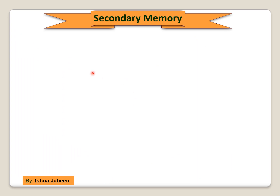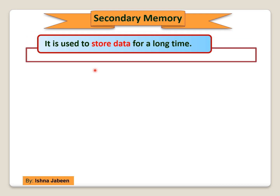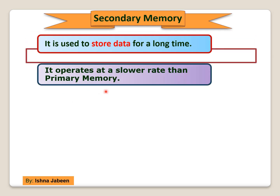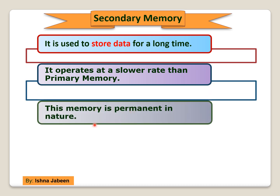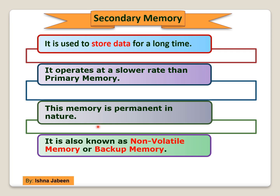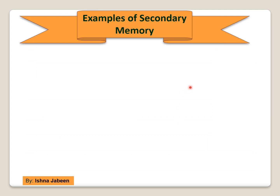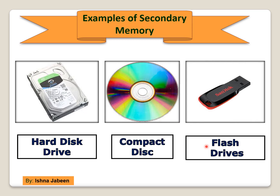Secondary memory is used to store data for a long time. It operates at a slower rate than primary memory and is permanent in nature — data stored is not lost even when the computer is switched off. It is also known as non-volatile memory or backup memory. Examples of secondary memory are hard disk drive, compact disk, and flash drive.